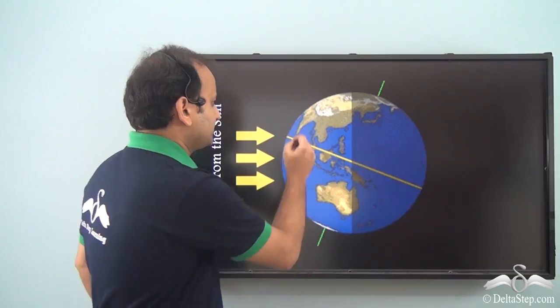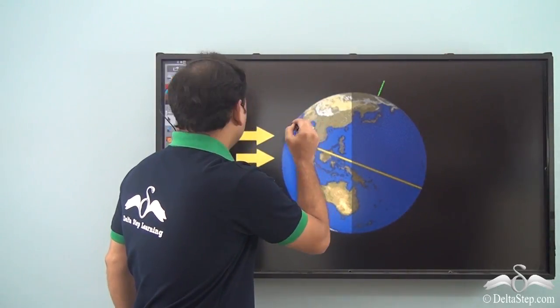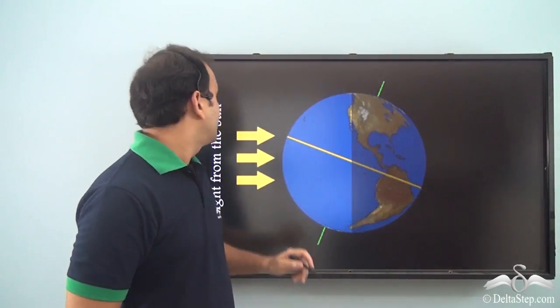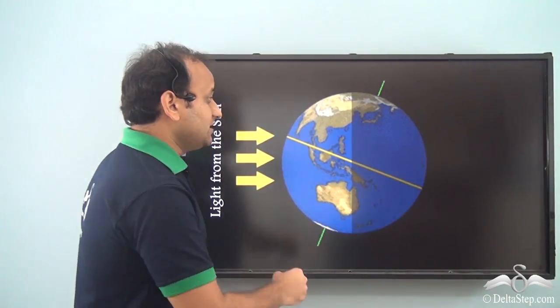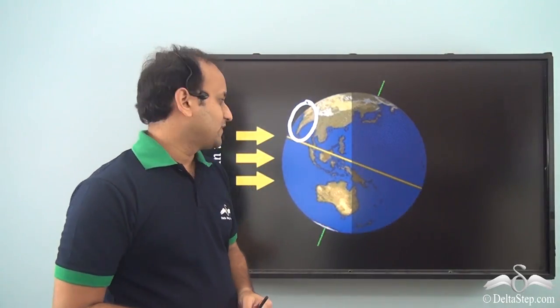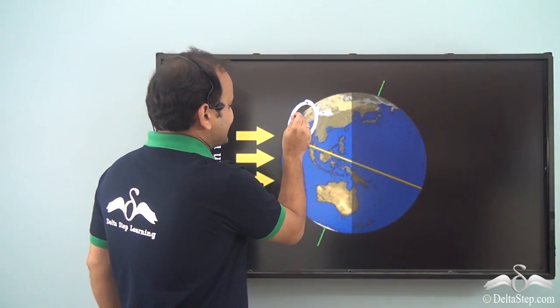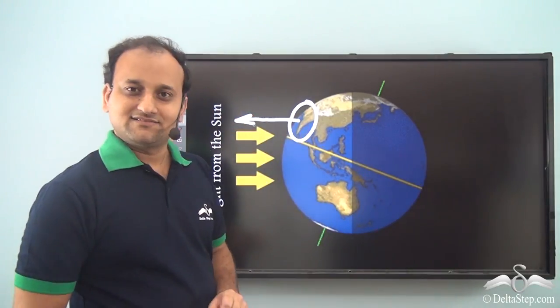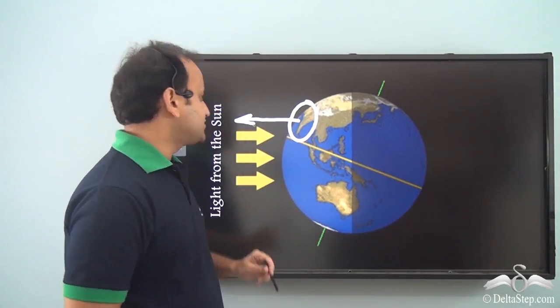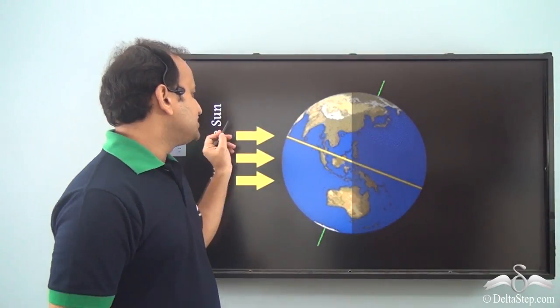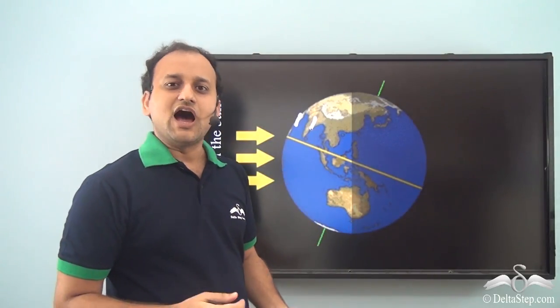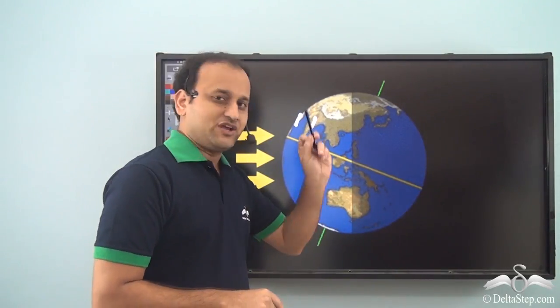So you see here, this is India, the country. Now currently it is directly facing the Sun, that is, it's afternoon in India right now. Now after some hours it changes its position. So it was here, now it's here. So definitely, it is somewhere around 3 p.m. right now.